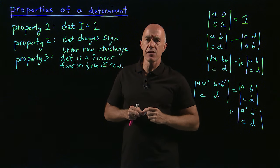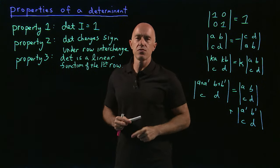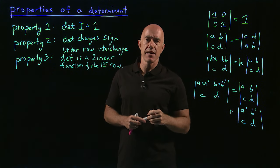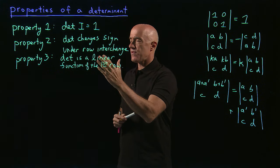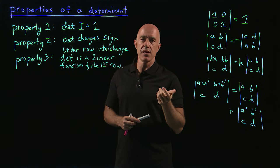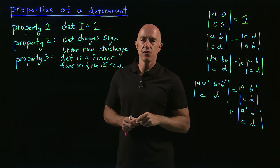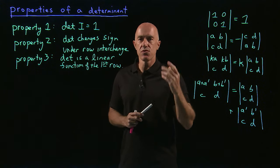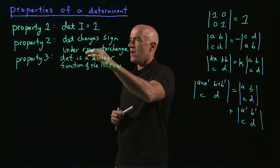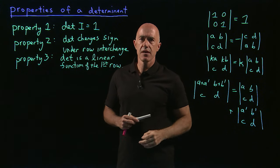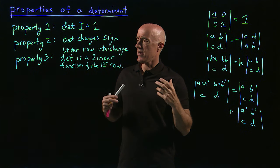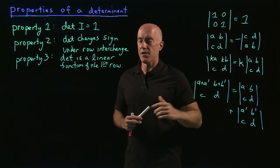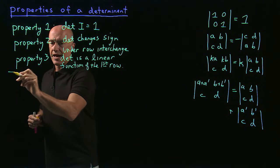The beauty from a mathematical point of view is that these three properties are all you need to define the determinant function — the function that maps an n by n matrix to a scalar. From these definitions you can prove the Laplace expansion and the Leibniz formula for n by n matrices. We won't do that here, but I want to show what other properties these three imply.